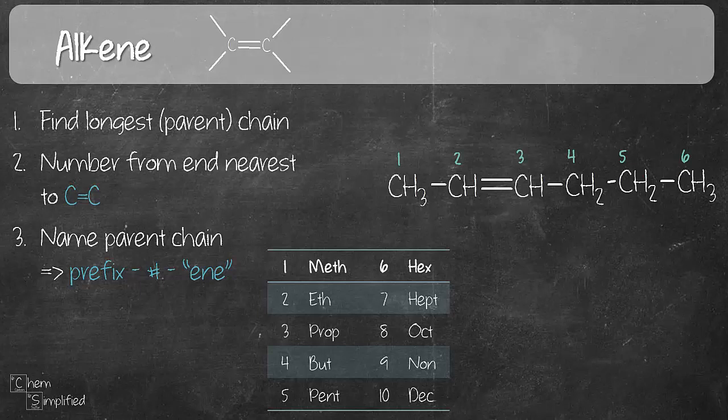And then we name the parent. The way we're going to name the parent is we're going to start off with prefix, and then we put in a number where the C=C double bond is, and then we put in -ene to indicate alkene. So let's look at this one. We have 6, so that is hex. And then that number that you're going to put is 2, because the double bond is between carbon 2 and carbon 3. So you're going to use the smaller number. So that will be 2 and then -ene. See, that's pretty easy, right?